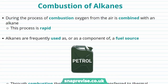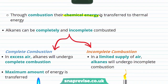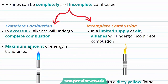Looking at some of the reactions alkanes do undergo: our alkanes can be combusted. During the process of combustion, oxygen from the air is combined with our alkane — it's quite a rapid process. For this reason, alkanes are frequently used as a component of fuels, so through combustion their chemical energy is transferred to thermal energy where it's more useful. Alkanes can be completely and incompletely combusted — they're two slightly different reactions that occur.